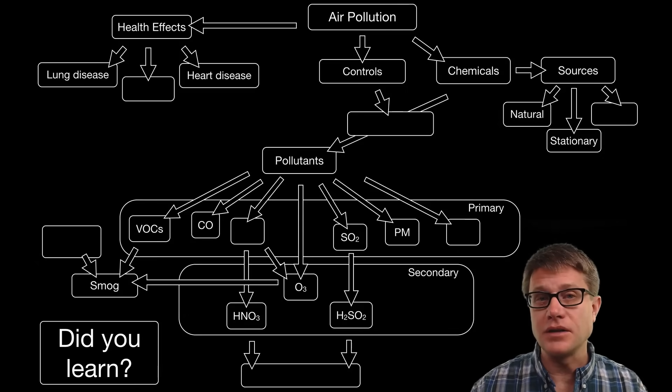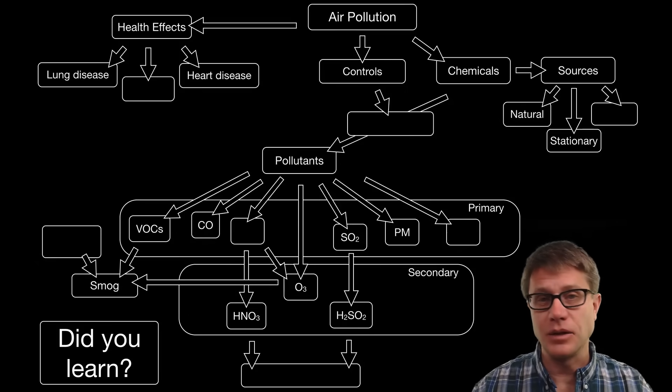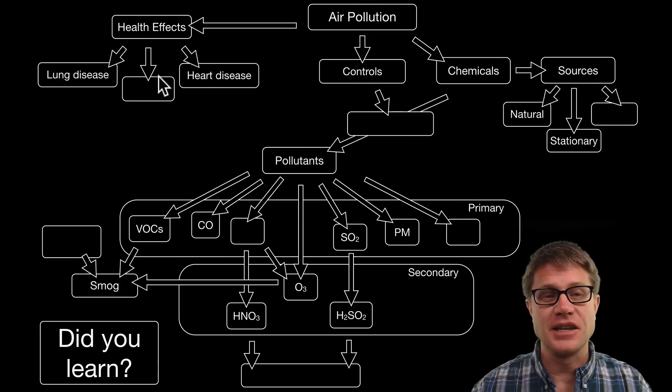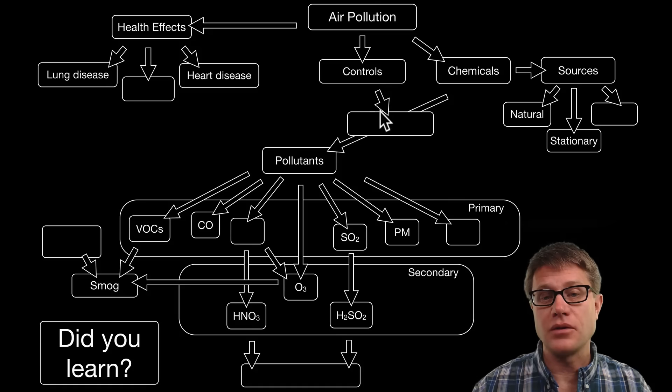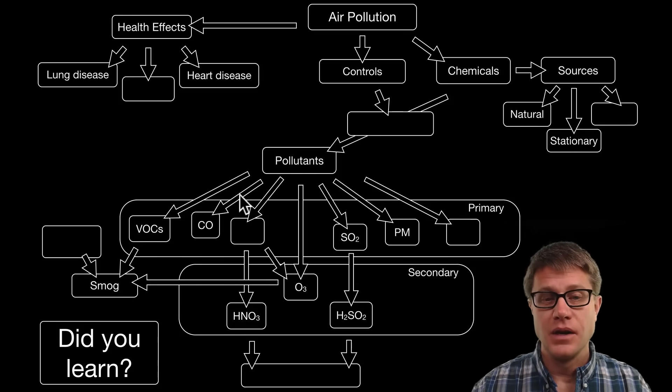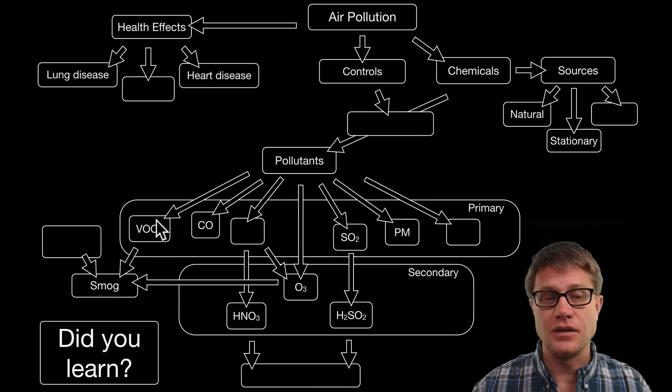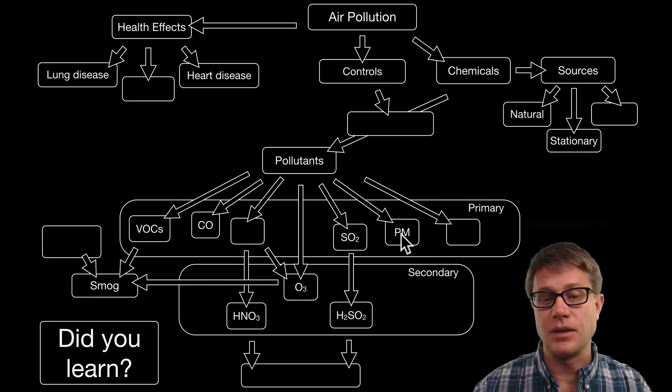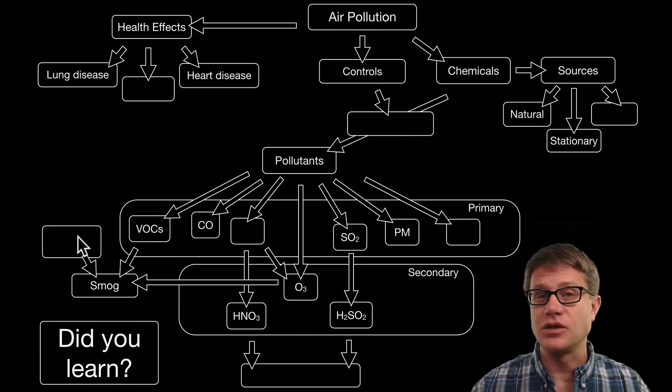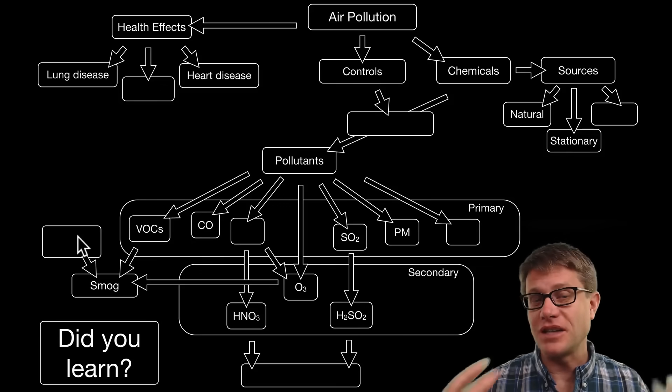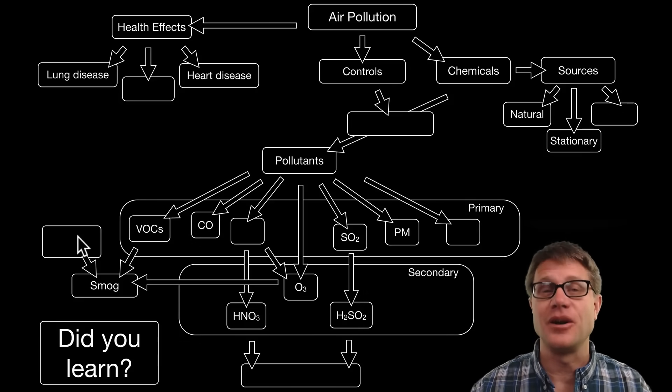And so did you learn the following? Could you pause the video at this point and go through and fill it all out? Well let me do that for you. It can cause lung disease, heart disease and then increased cancer risks. Those chemicals could come naturally. They could come from stationary or mobile sources. We can control that through the Clean Air Act and technology and regulation. If we look at the pollutants themselves, again in review it is VOCs, carbon monoxide, NOx. That produces nitric acid. We have sulfur dioxide, particulate matter and then things like lead. These acids can lead to acid deposition. And the combination of all of these produces smog which is exacerbated by temperature inversions. And so that is air pollution. It is deadly if we do not regulate it. And I hope that was helpful.